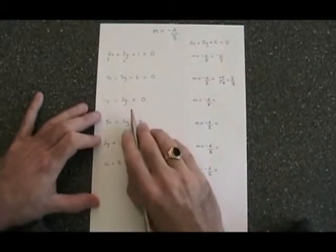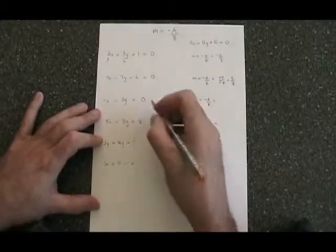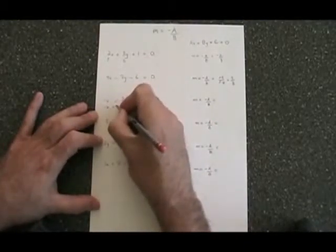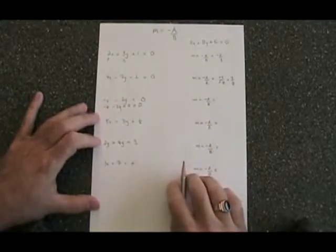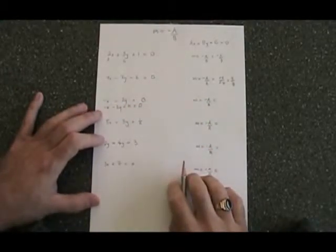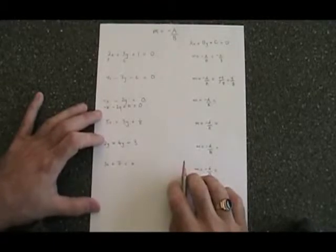In the third equation, there is no c, but I can rewrite the equation if I wish. Negative x minus two y plus zero equals zero. It's in the form. The a is negative one, the b is negative two.